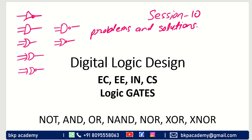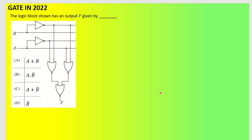Let us start with question number one. This was asked in 2022 in the Instrumentation branch. The question is: the logic block shown has an output F given by — so what is the function we are going to get? We can see we have a NOT gate and two NOR gates.